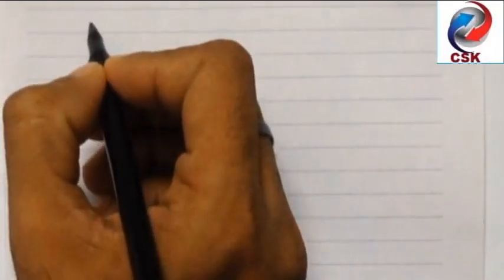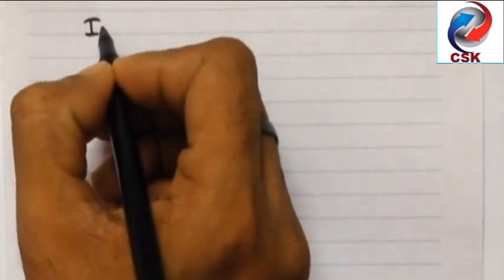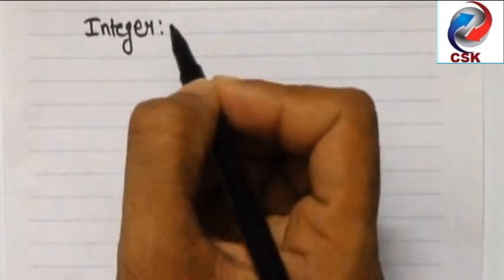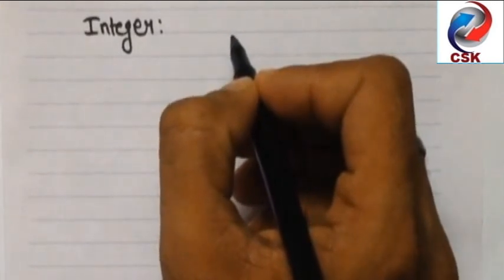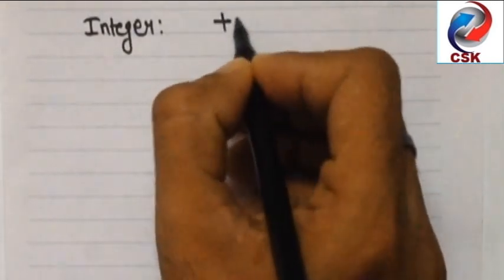Hello students, in this video we are going to learn everything about integer numbers. Integer numbers are the numbers which can either be positive, negative, or neutral. By its name, an integer number should be a complete number.